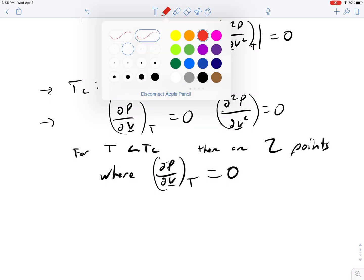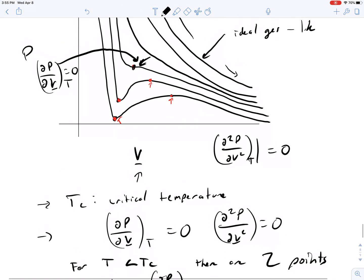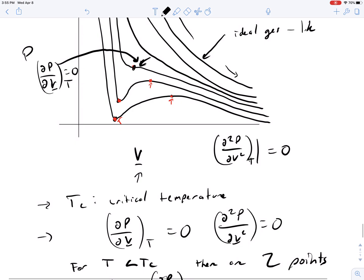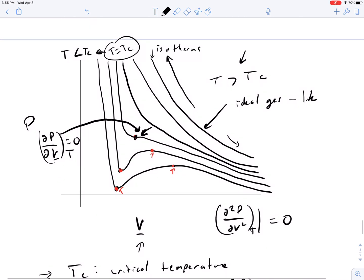What is interesting about this is you'll notice on lines below this critical temperature, there are regions, there are pressures where the pressure crosses three times. We're going to learn in a minute that two of them are stable and one of them is unstable.